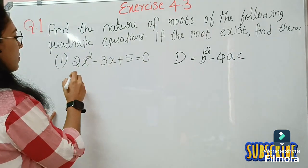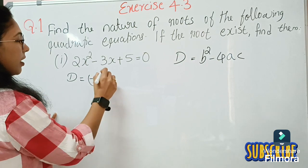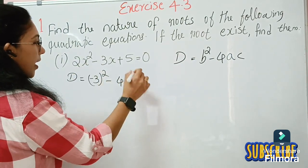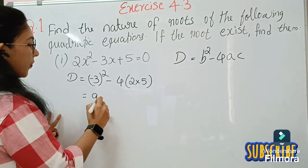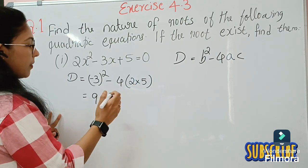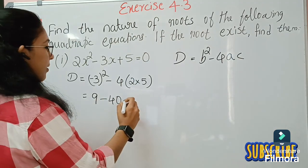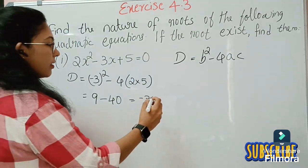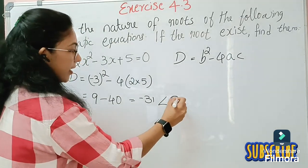Let's find out discriminant D, which equals B² minus 4ac. B² is (−3)² = 9, minus 4 times A (which is 2) times C (which is 5). That gives 9 minus 4 times 2 times 5 = 9 minus 40, which equals −31.